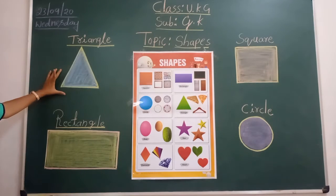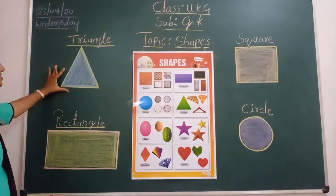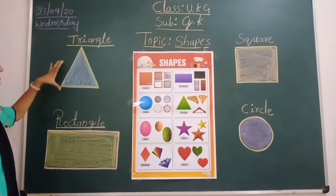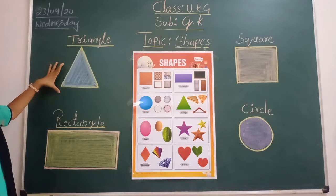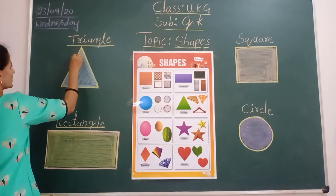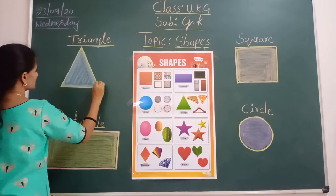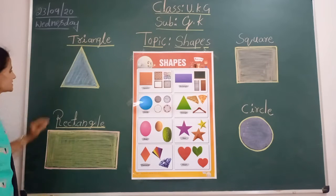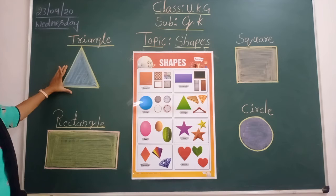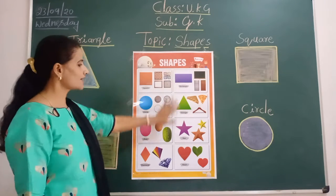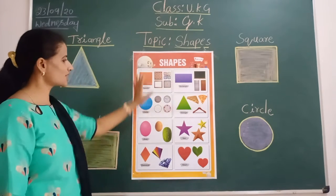See children, what is this shape? Triangle. Here, one, two, three sides. How many sides? Three sides. What is this shape? Triangle. You will see in the chart — shapes chart.